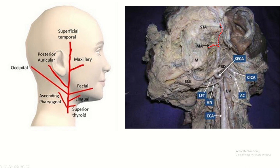This is the dissection of the face and neck. This is the common carotid artery, and this is the external carotid artery. Here it gives its terminal branches: the maxillary artery and the superficial temporal artery.